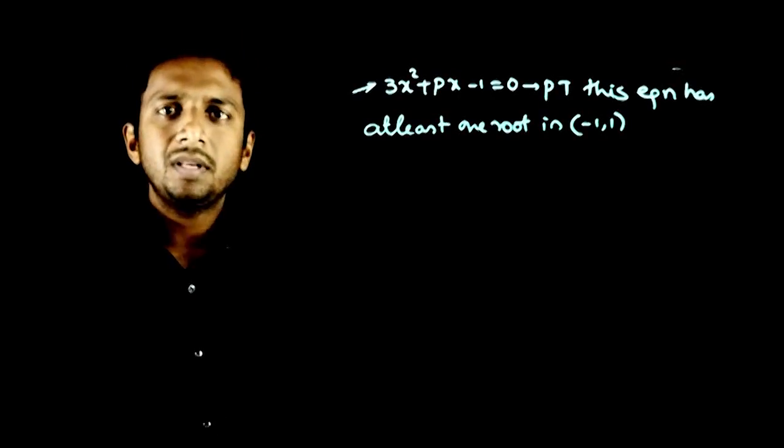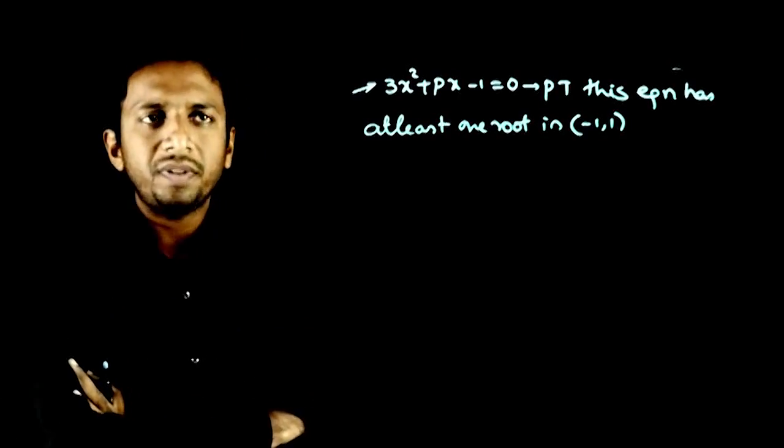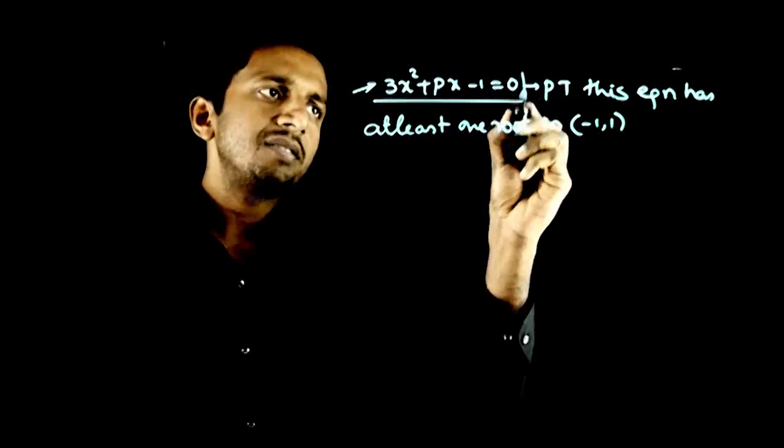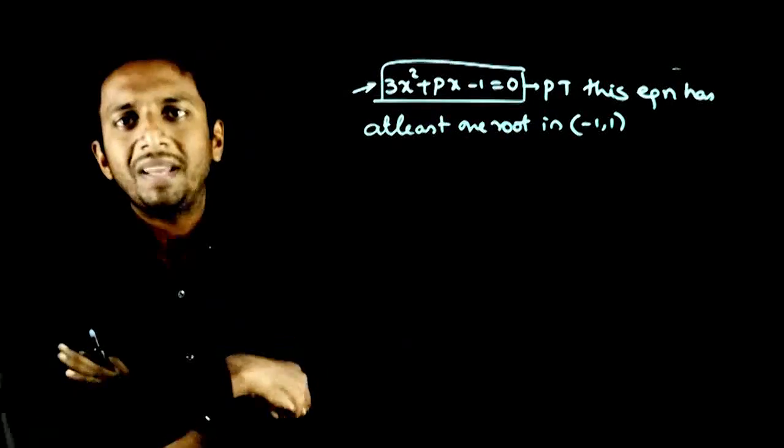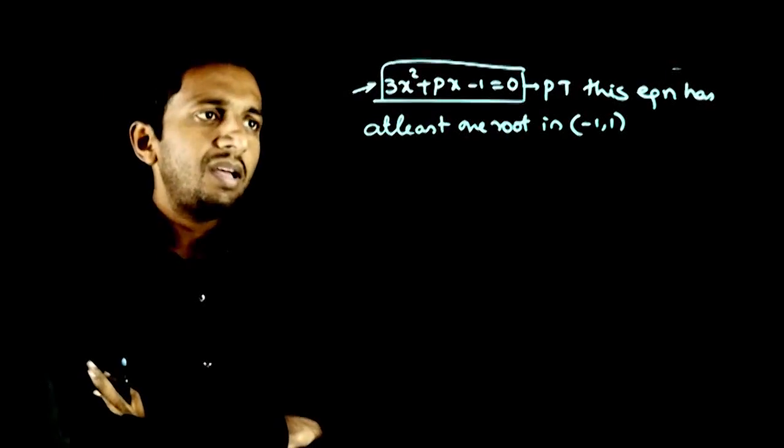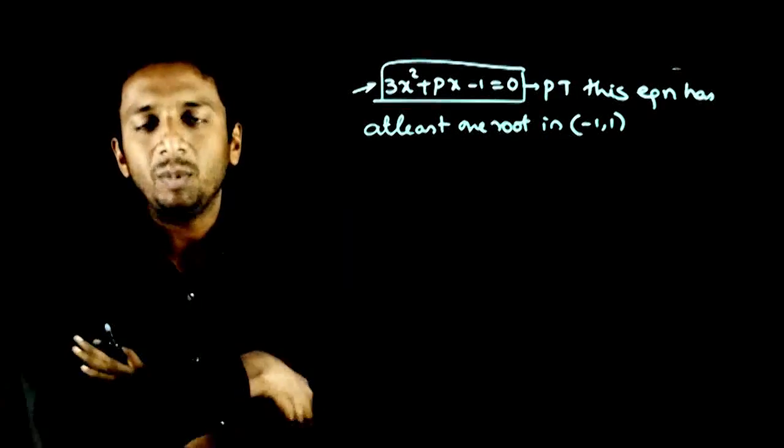So, welcome students. In this question, you are asked to prove that this equation 3x² + px - 1 = 0 has at least one root in (-1, 1).